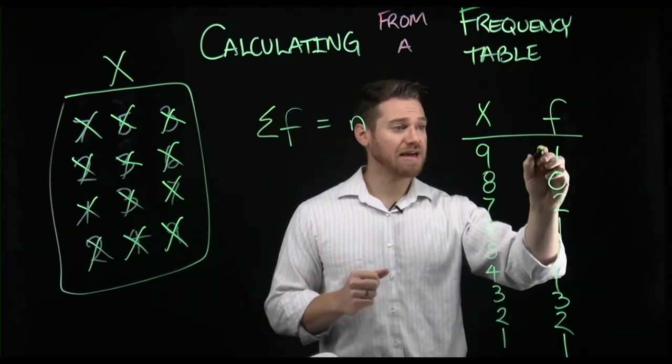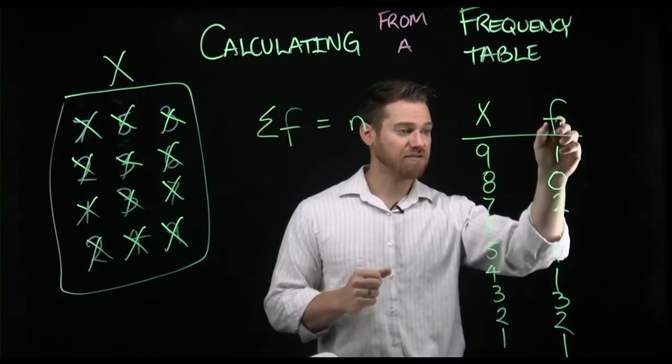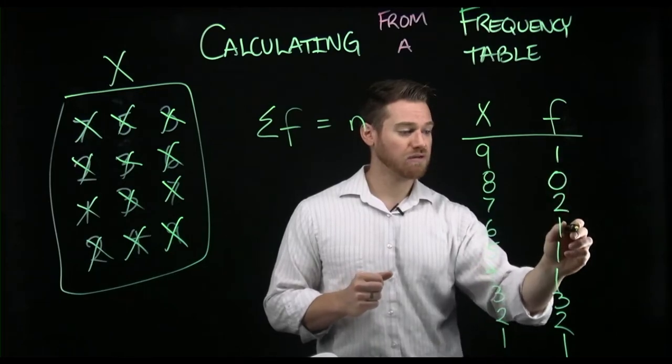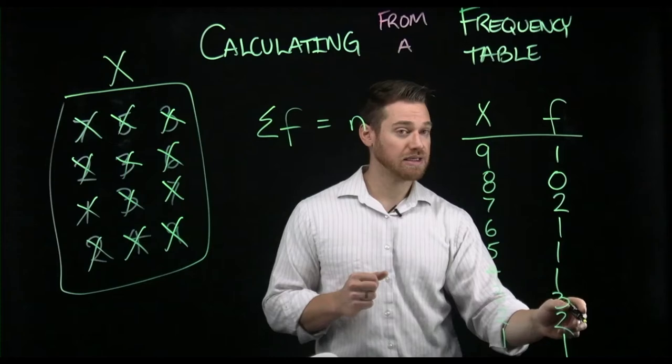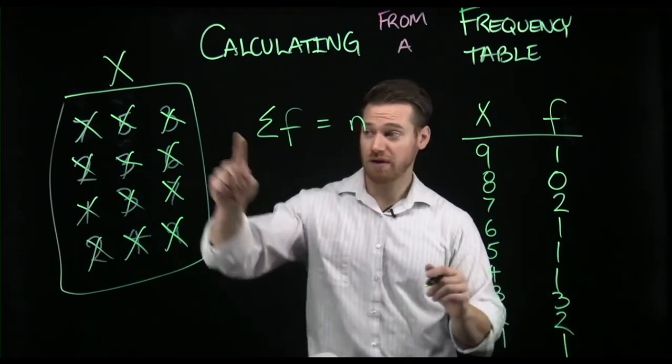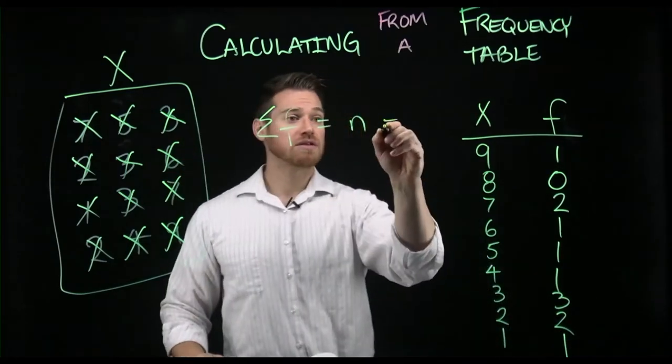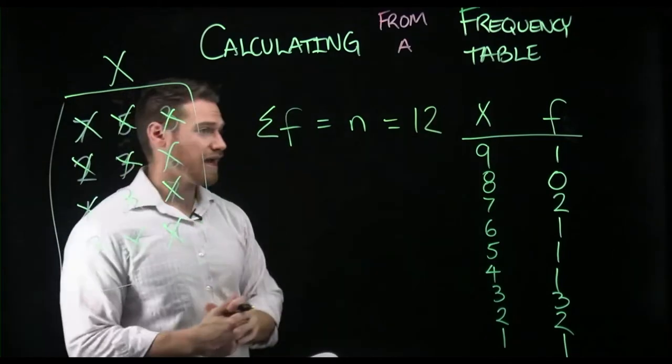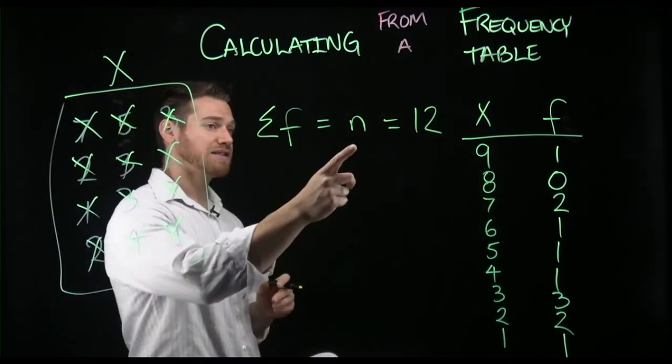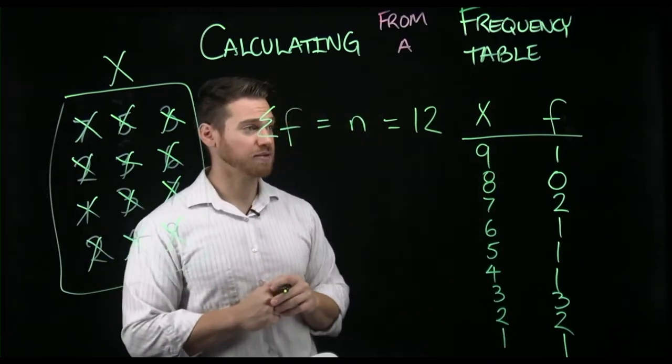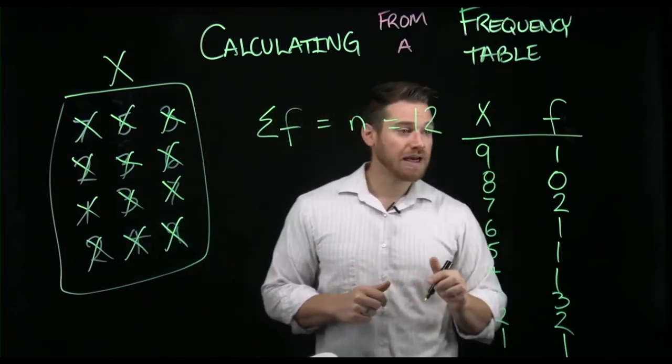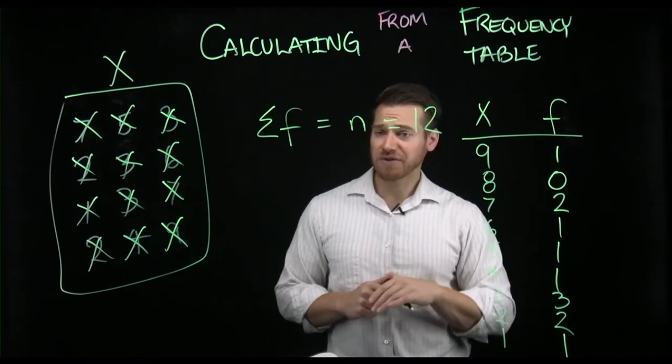So here I would just add up all of my values in f. One, three, four, five, six, nine, 11, 12. So here the sum of f, the frequencies, is the sample size, which is 12. I have 12 scores that I have obtained here. Now I can do other things with this as well.